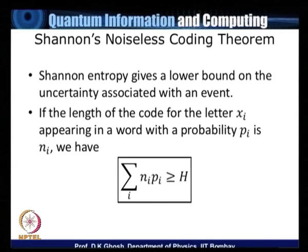Shannon entropy gives a lower bound on the uncertainty associated with an event. If the length of a uniquely decipherable prefix code happens to be ni with probability pi, then the length of the word should be greater than or equal to the Shannon's entropy.